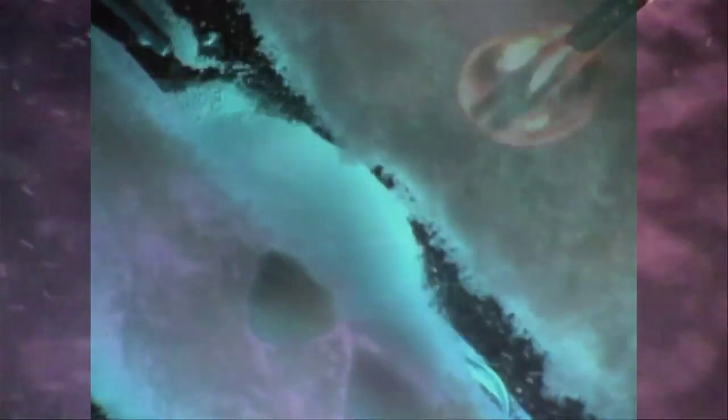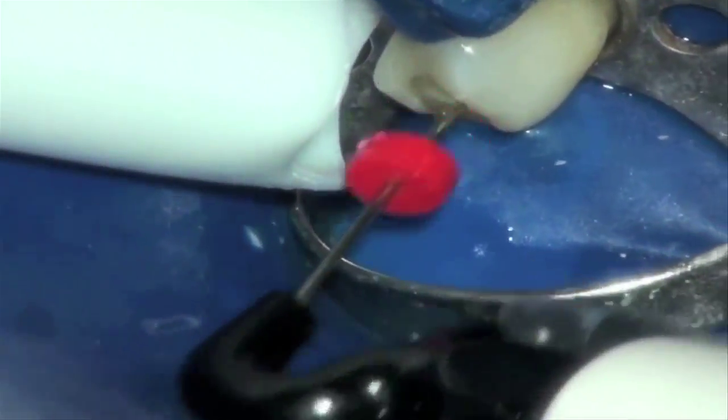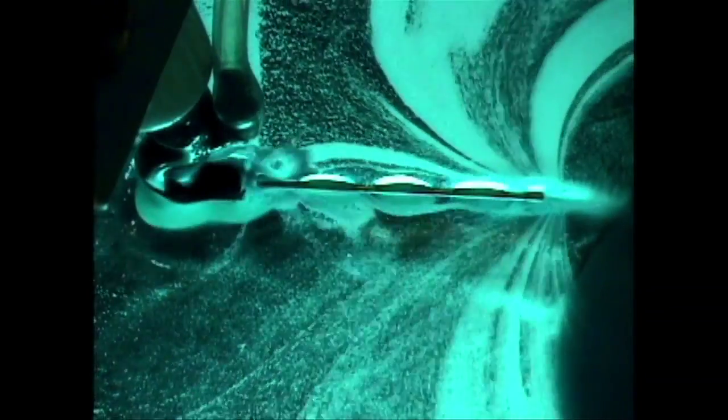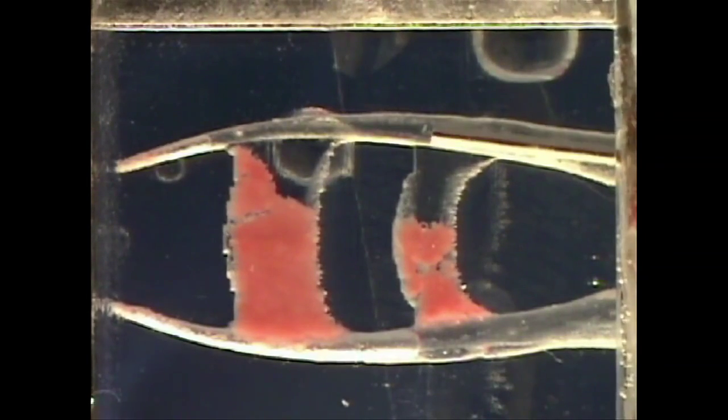In this demonstration, the activation of a root canal irrigant with an ultrasonic device, the Piezoflow, and the subsequent acoustic streaming it creates shows how the solution in its activated state enables the clinician to loosen and remove tissue from the canal irregularities. This is essential for complete canal debridement and preparation for thorough obturation.